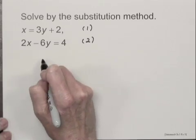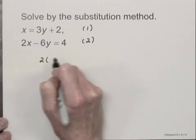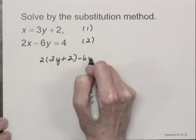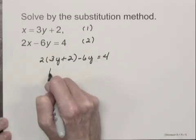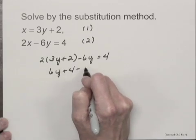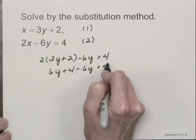We have 2 times 3y plus 2 minus 6y equals 4. Removing parentheses, we have 6y plus 4 minus 6y equals 4.